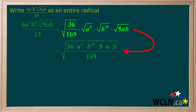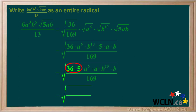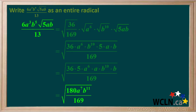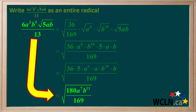We'll combine these to form a single square root, then group the numbers together and the variables together. 36 times 5 is equal to 180. a to the 6th times a is equal to a to the 7th. b to the 10th times b equals b to the 11th. And 169 is written in the denominator. So we're left with an entire radical where the mixed radical is converted to an entire radical with everything under one radical sign.